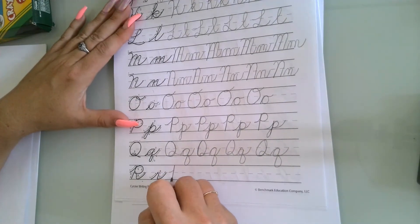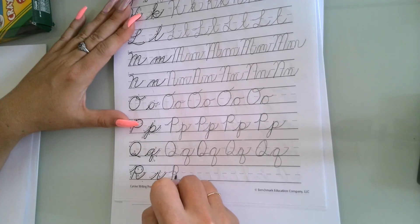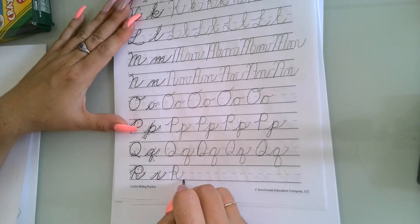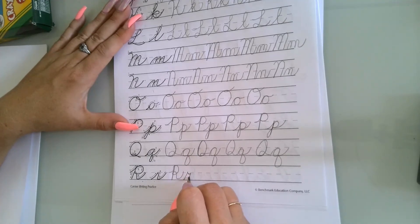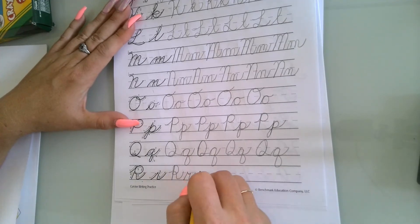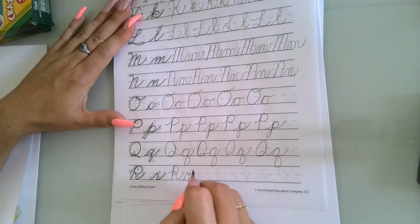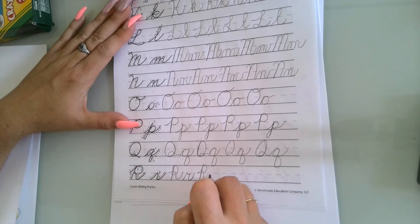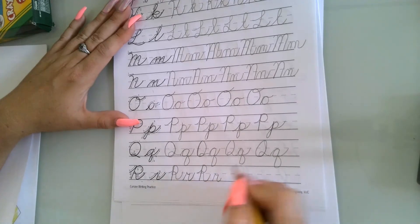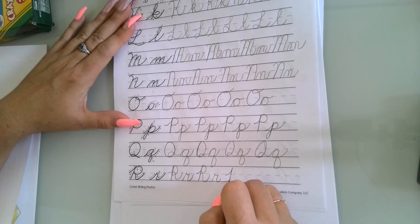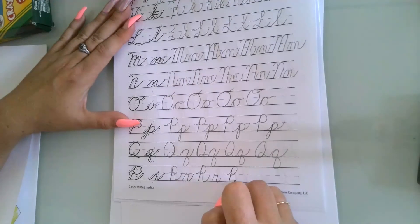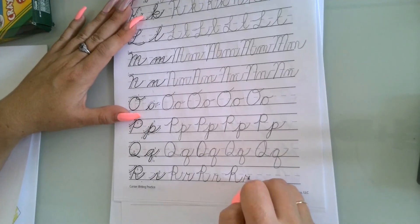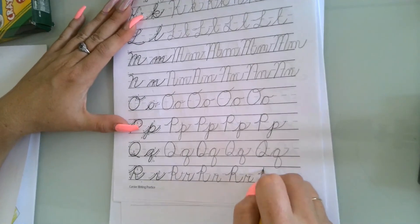An R is very similar to a print R. You do a little loop here all the way over. The lowercase R's are interesting. You want to do kind of a little divot right there, kind of bring it down. They're hard to write small. You want to try to keep them thin so you can fit everything. These letters are a little big that we're practicing here. Make sure you're hitting the top and the bottom lines with your capitals. With your lowercase, you always want to stay on that middle line. There you go.